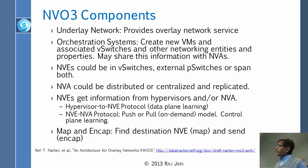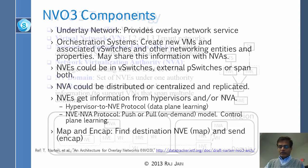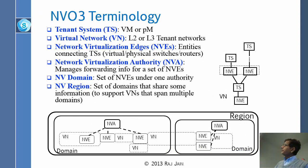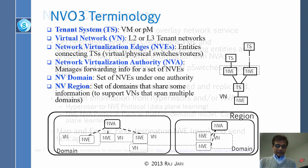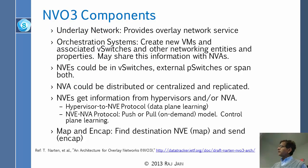NVEs get information from hypervisors and from the NVA. An NVE can find out what is connected to it either via a protocol or by asking the local hypervisor directly. Or it can query the NVA, an outside controller. This gives us two modes: hypervisor-to-NVE protocol (data plane learning, similar to source learning) and NVE-to-NVA protocol (control plane learning, exchanging messages).